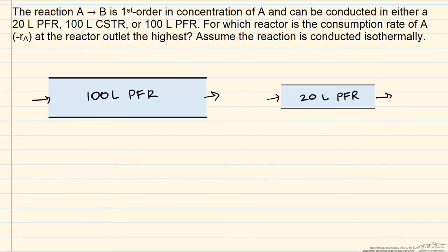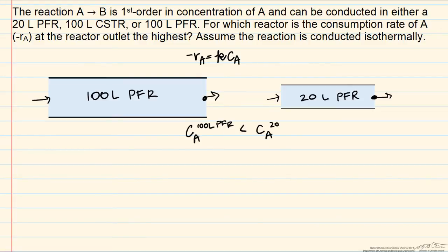First, we can compare the two PFRs: the 20-liter and the 100-liter plug flow reactor. The one with the higher consumption rate at the exit is expected to be the one with the higher concentration at the exit, since for a first-order reaction the rate is directly proportional to concentration. A larger reactor converts more A to B, so the 100-liter PFR will have a lower outlet concentration than the 20-liter PFR. We can therefore eliminate the 100-liter PFR — it cannot have the highest rate. The answer must be either the 20-liter PFR or the 100-liter CSTR.